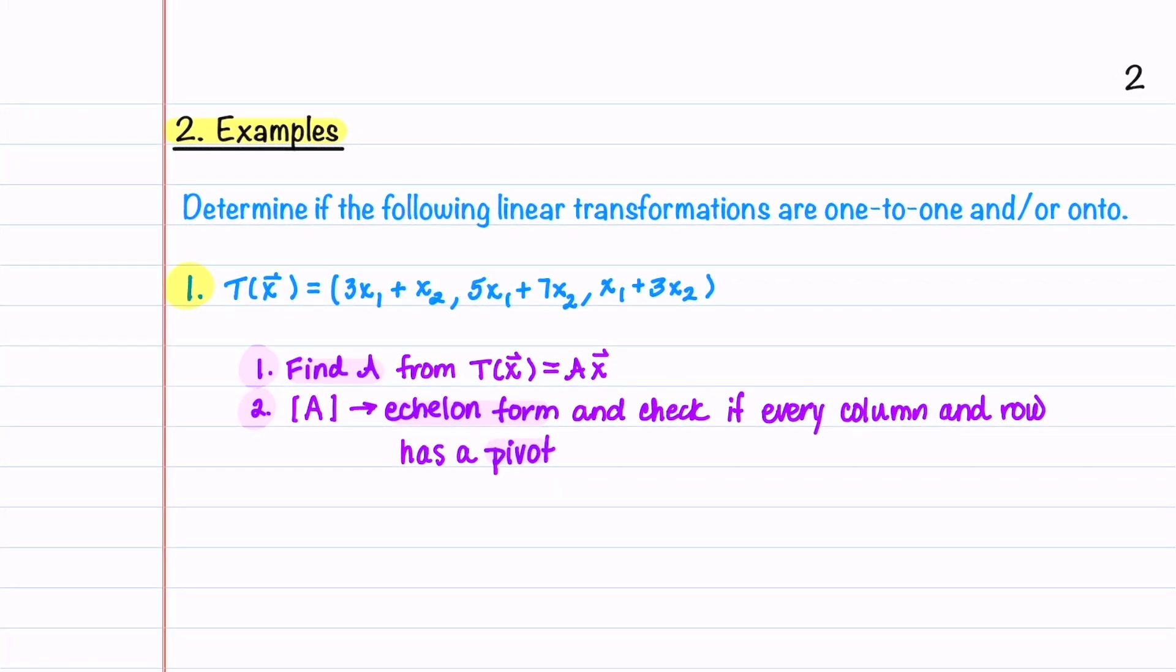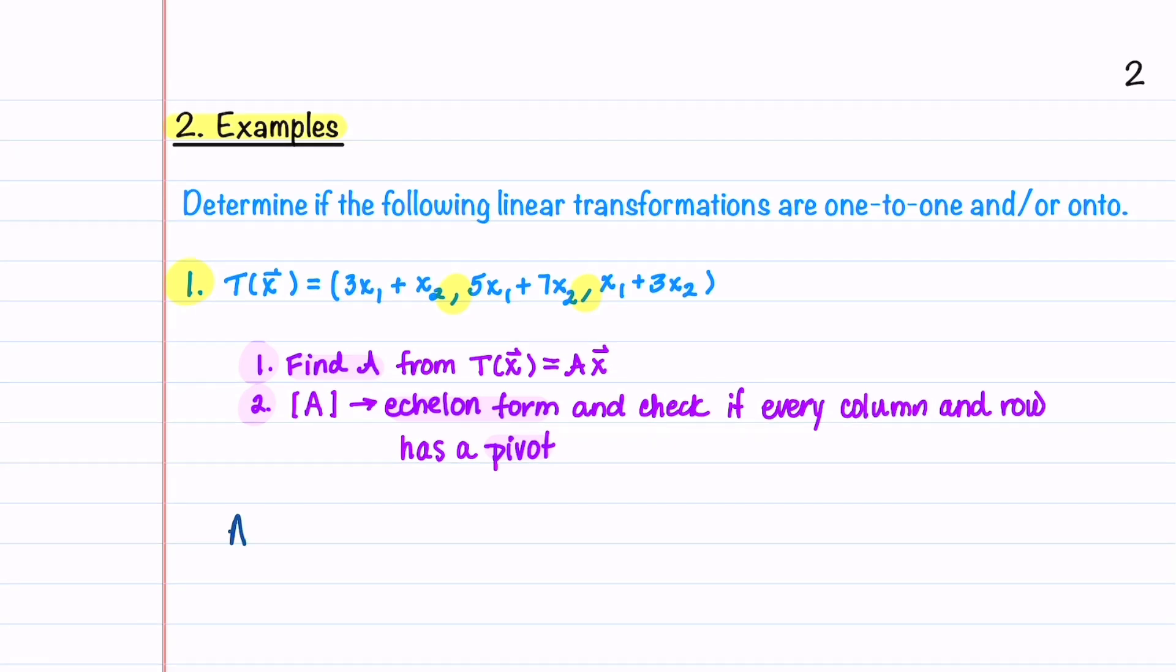In setting up our matrix A, we need to remember that the commas in our transformation denote the different rows of A. Our A is going to be equal to 3, -1, 5, -7, and then 1, -3. When we put this matrix in echelon form, I'm going to skip the steps, it looks like this.